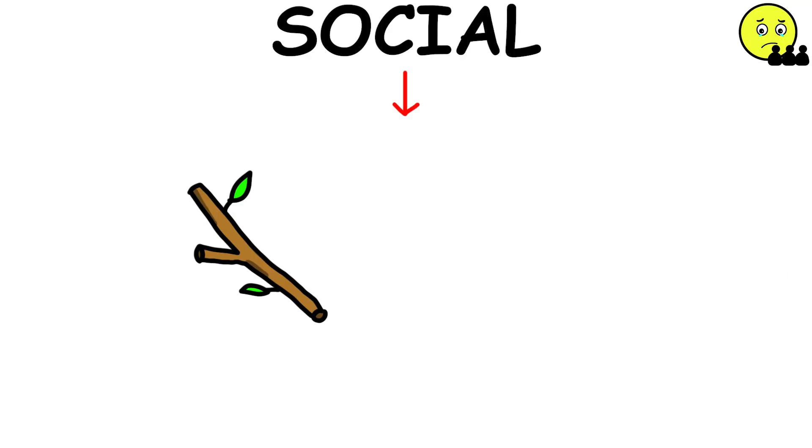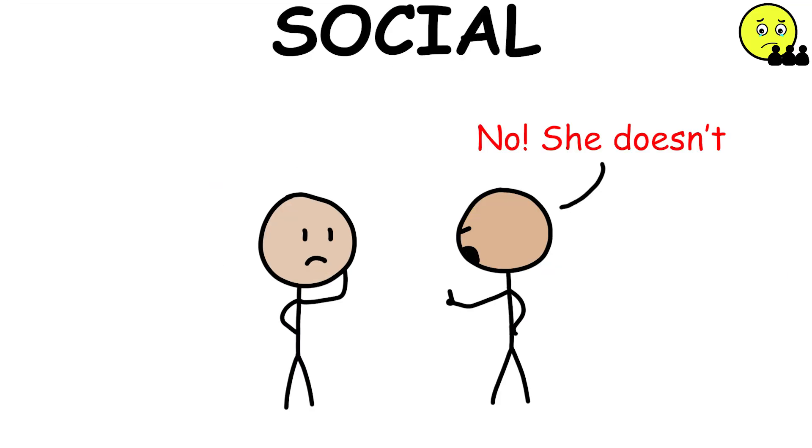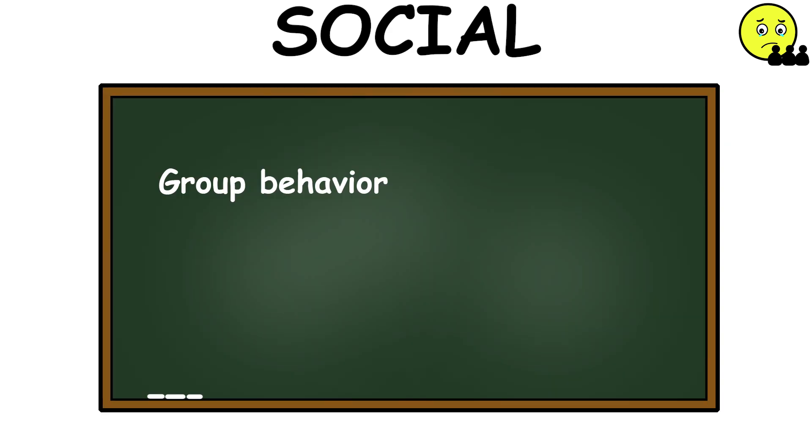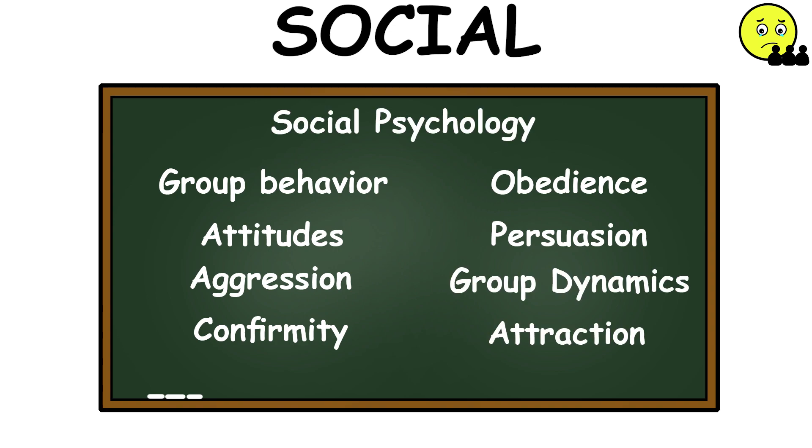Social psychology. This branch of psychology is interested in how people's thoughts, behaviors, and emotions are influenced by other people. Group behavior, attitudes, aggression, conformity, obedience, persuasion, group dynamics, and attraction are just some of the major areas of interest in social psychology.